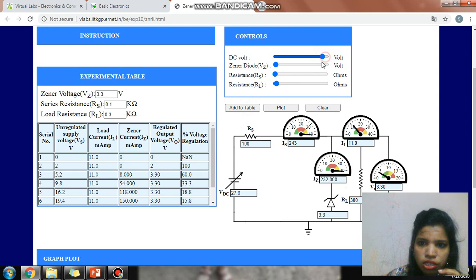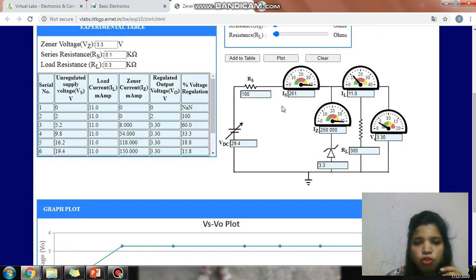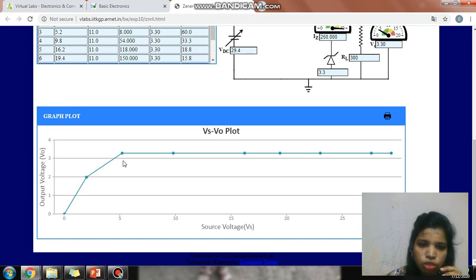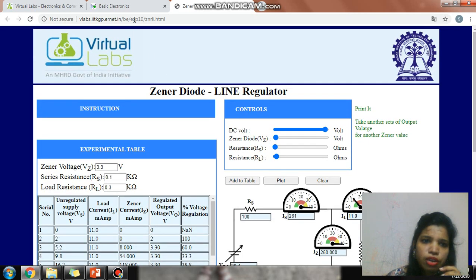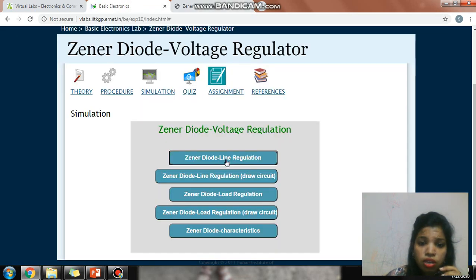You can note the changes in the table as per the voltage. This is our input voltage, and this is the load current and Zener current. As per Zener current, what is the variation in output voltage? Here is the list of resistance and voltage regulation. You can check the load. In the starting there was some variation, but after that the output voltage is approximately constant. That is your Zener diode line regulation.